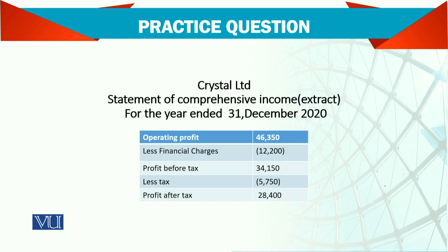They haven't given the full income statement — they have given just the comprehensive statement of income, and there is operating profit given separately. Then we have financial charges, profit before tax, less tax, and we get the profit after tax, which will be added to retained earnings in the balance sheet. The figure of 46,350 is operating profit, and it is clearly before interest and tax, so we start from here to prepare the statement.